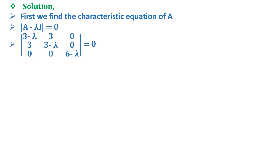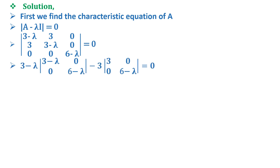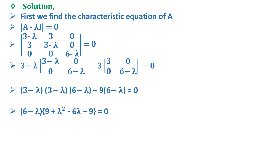The determinant is of the matrix [3−λ, 3, 0; 3, 3−λ, 0; 0, 0, 6−λ] = 0. This gives (3−λ)(3−λ)(6−λ) − 9(6−λ) = 0. Taking (6−λ) as common, we get (6−λ)(9 + λ² − 6λ − 9) = 0, which simplifies to (6−λ) · λ · (λ−6) = 0, giving eigenvalues λ = 0 and λ = 6.